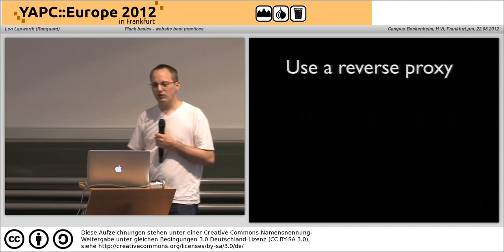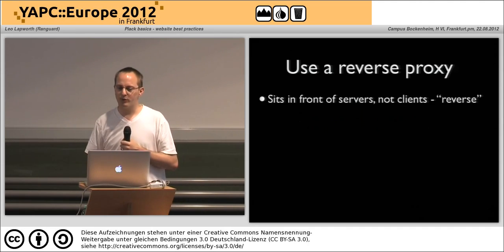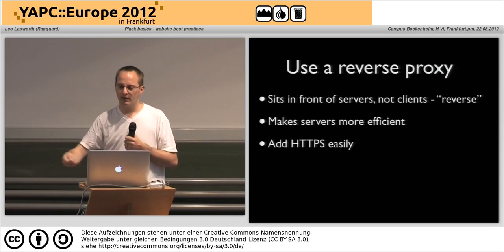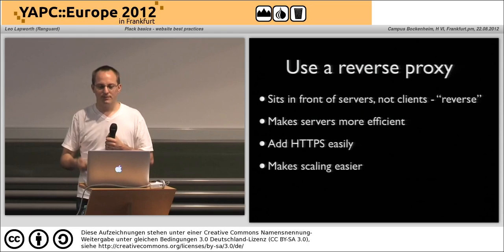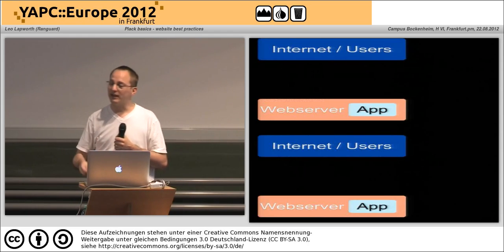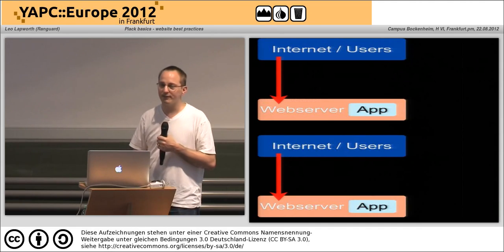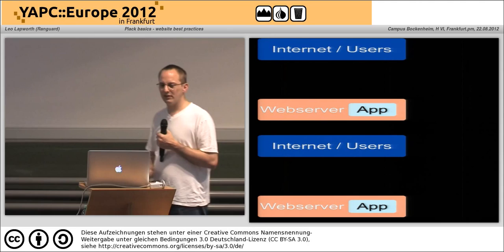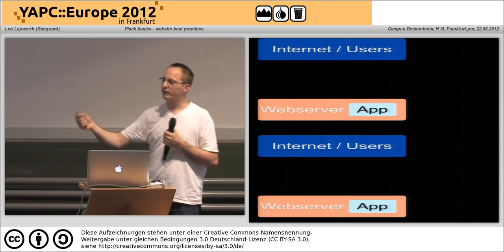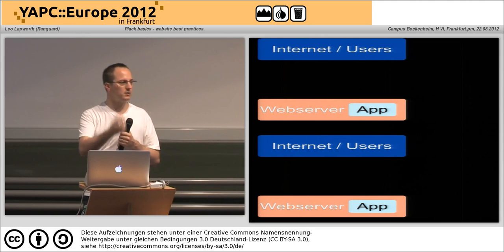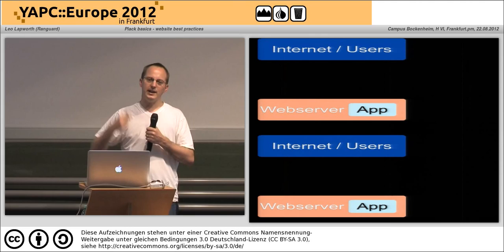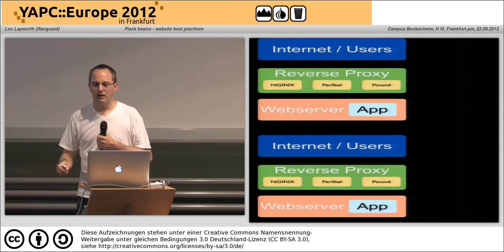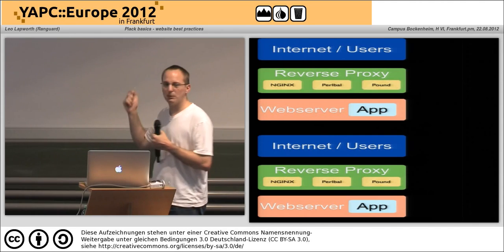A little tip when you're setting up networks: look at using a reverse proxy. A reverse proxy sits in front of your web servers, not your clients — hence 'reverse.' It makes your servers more efficient, makes adding things like HTTPS a lot easier, and makes scaling easier. Our standard environment is internet users talking directly to our web server and the server responds back — that's fine as long as users are on fast local connections. The moment you have an international user on a mobile phone your web server sits there for ages trying to get content back to them.